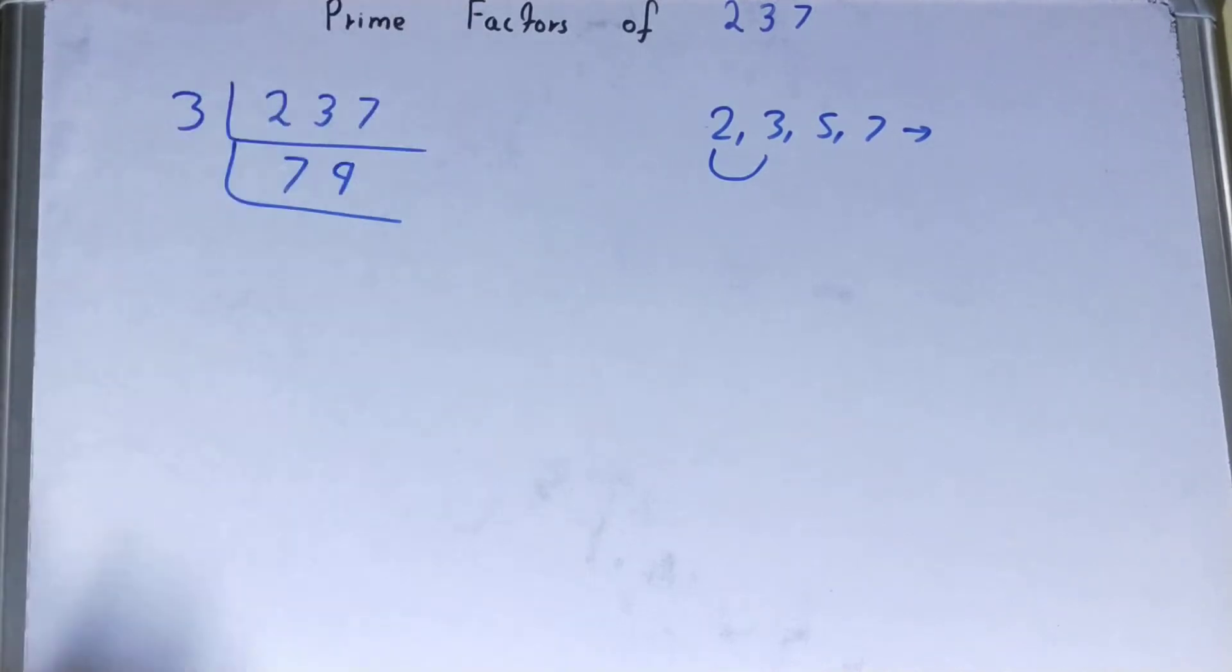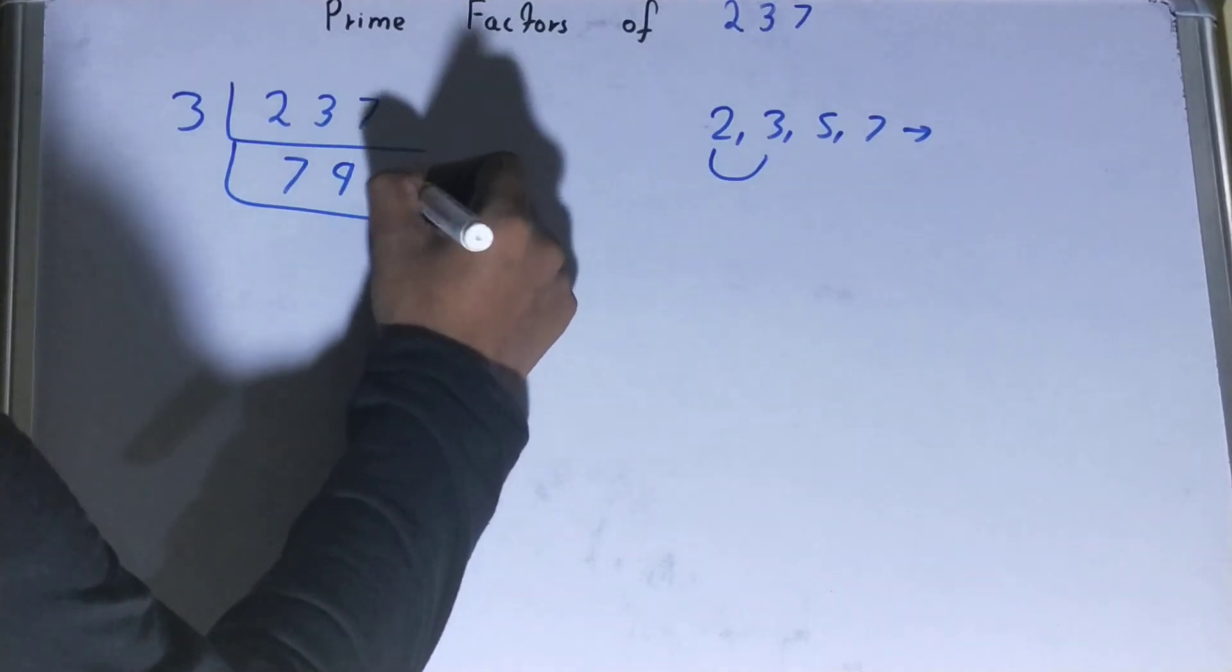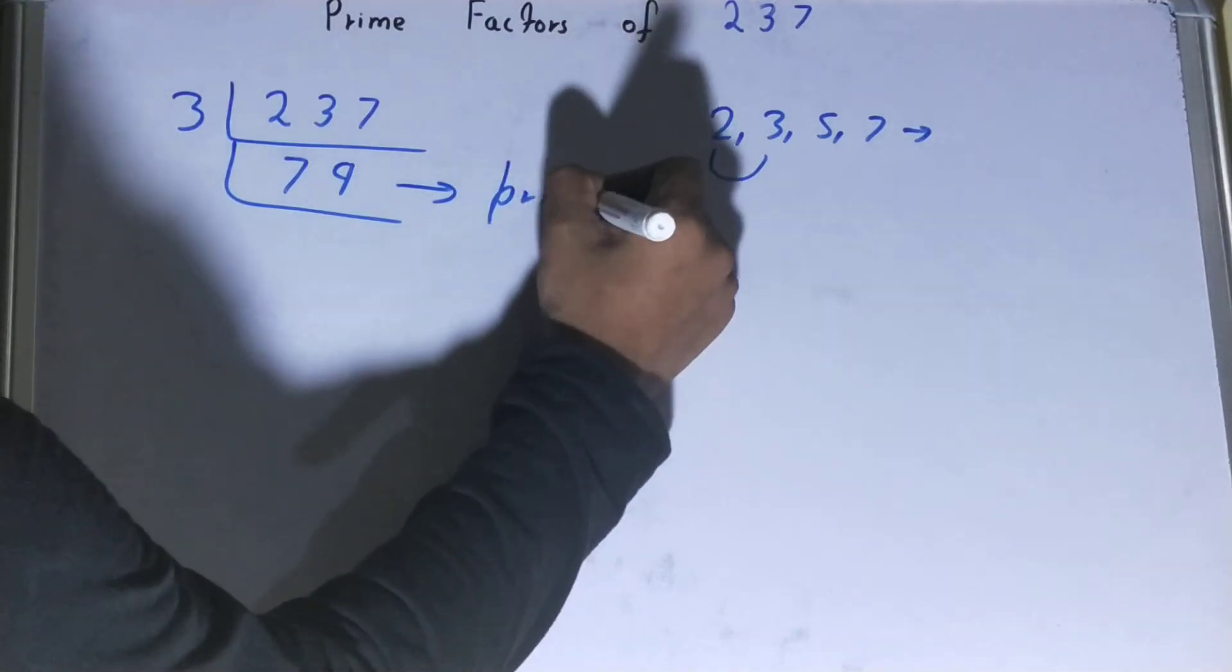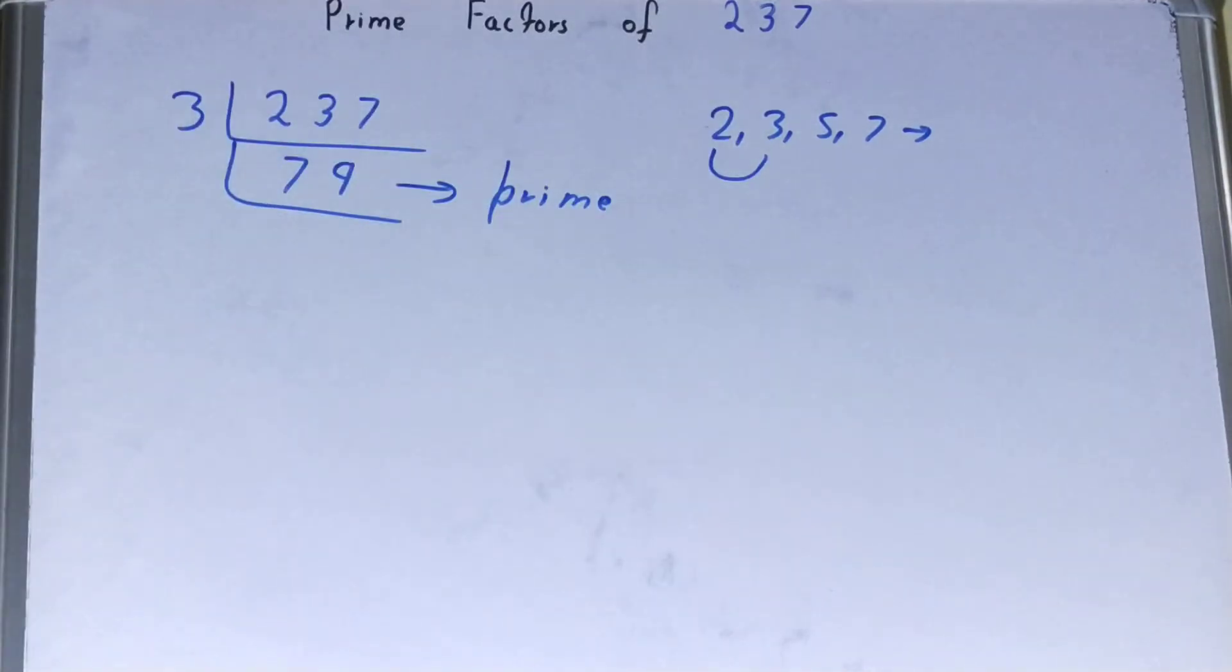Further on, is this 79 divisible by 3? No, and 79 is also not divisible by any other prime number. Why so? Because 79 is prime itself. And so to divide this 79, you need 79 on the left inside also.